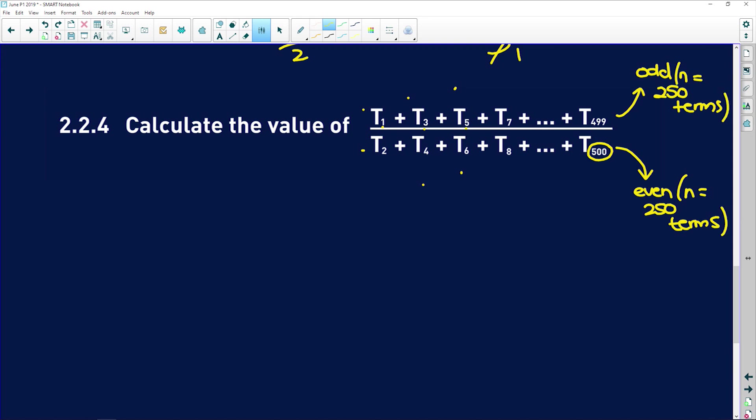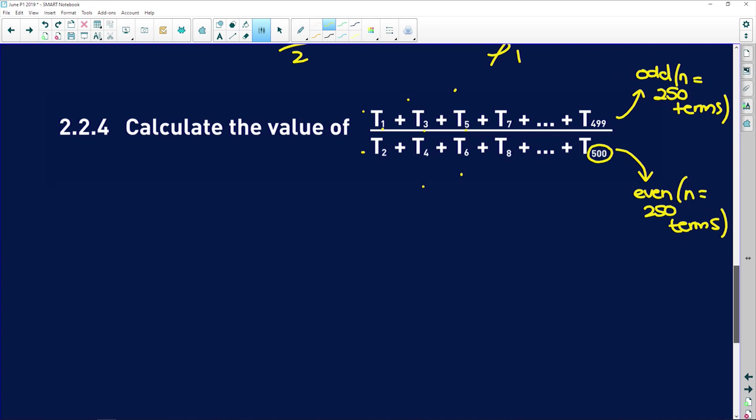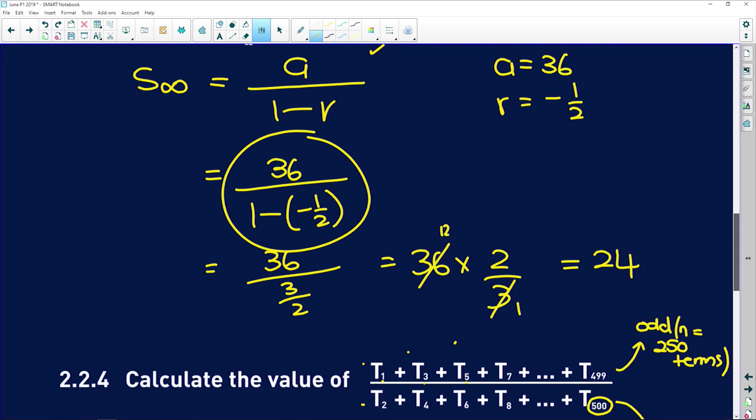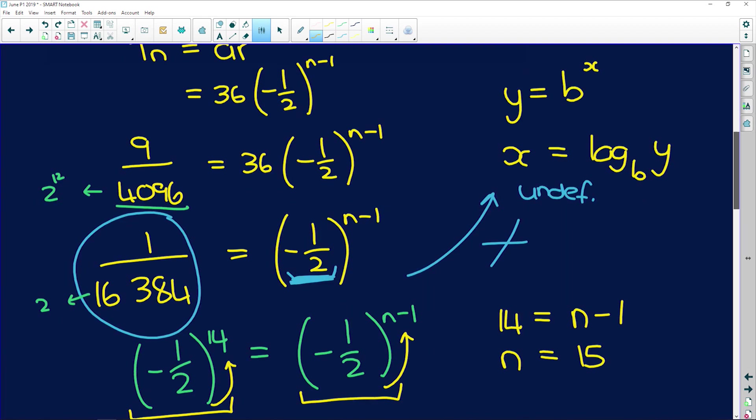So that's the first thing. There are a number of ways that you can deal with this thing. I'm going to say that the numerator is its own sequence. So in the numerator, we have the odd terms. And I'm going to treat them as their own sequences. So I'm going to say, in the odd one, the first term, if we look at our original pattern guys, remember, which was this thing. We have 36, negative 18, 9.